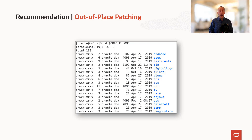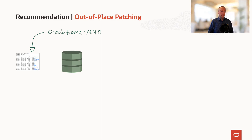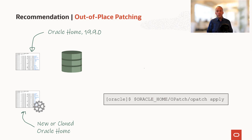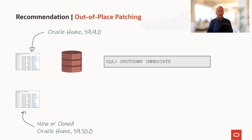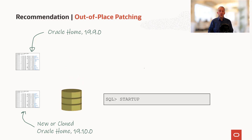Our very clear recommendation is that you do out-of-place patching. Imagine that you have your Oracle home — in this case it's a 19.9 Oracle home — and you have a database running in that Oracle home. What you should then do is provision a new Oracle home, either install it from scratch or clone an existing Oracle home. You then use opatch to apply the patch to the new Oracle home. You can do that without any downtime because there are no databases running in that Oracle home. Once you've done that, you can shut down your database running in the original Oracle home and restart the database in the new Oracle home.